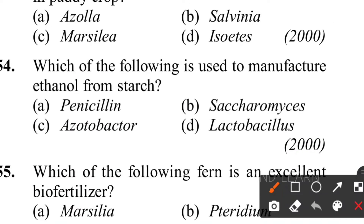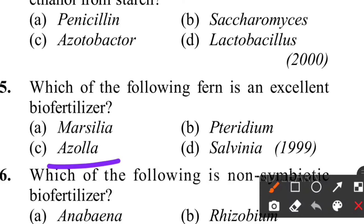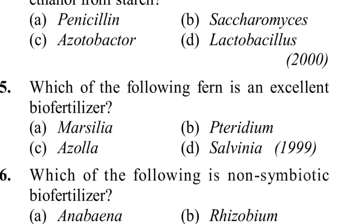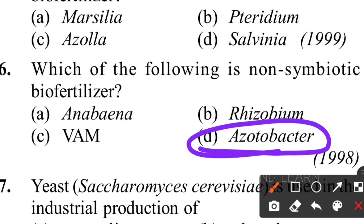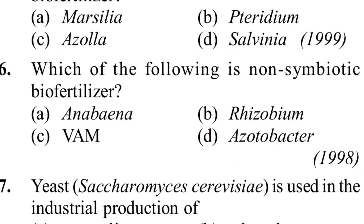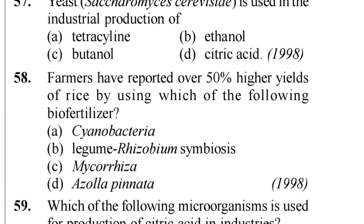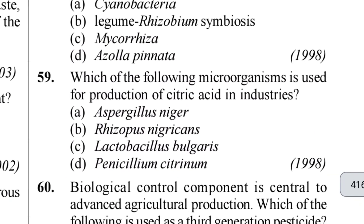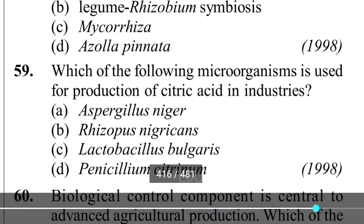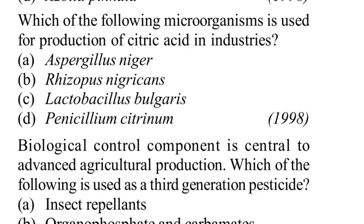Fifty-fourth question: which is used to manufacture ethanol from starch? The enzyme amylase (Saccharomyces) converts starch to ethanol. Fifty-fifth question: which fern is an excellent bio-fertilizer? Azolla is the excellent bio-fertilizer. Fifty-sixth question: which is a non-symbiotic fertilizer? Azotobacter - it is free-living bacteria, so Azotobacter is the non-symbiotic fertilizer. Fifty-seventh question: Saccharomyces cerevisiae yeast is used in industrial production of ethanol - option B. Fifty-eighth question: farmers reported 50% higher yield of rice by using Azolla pinnata. Fifty-ninth question: which microorganism is used for production of citric acid in industries? Aspergillus niger.